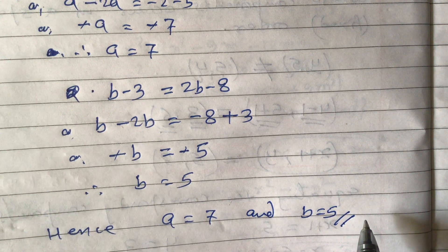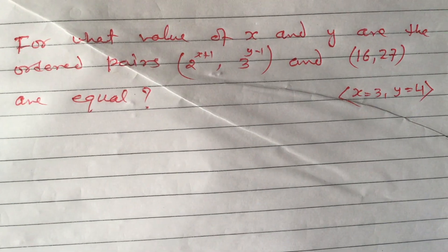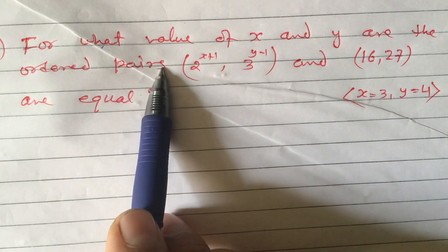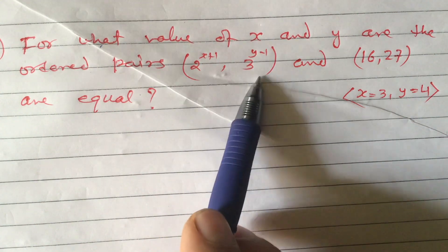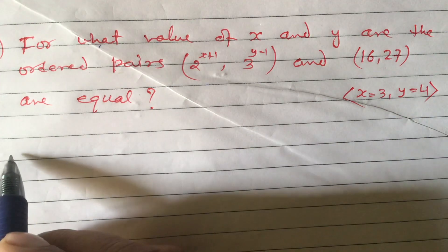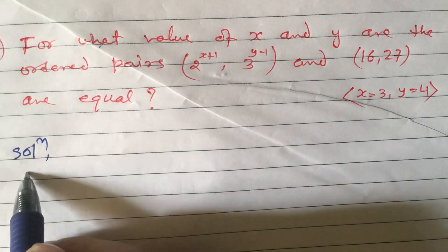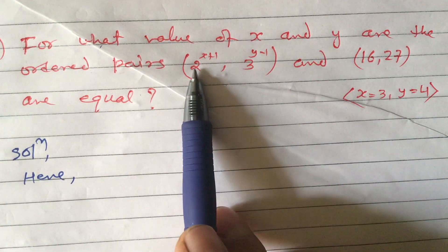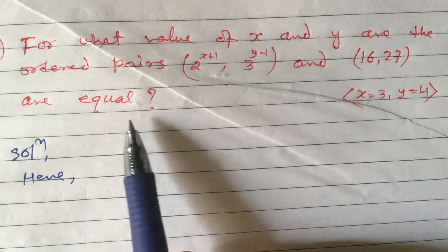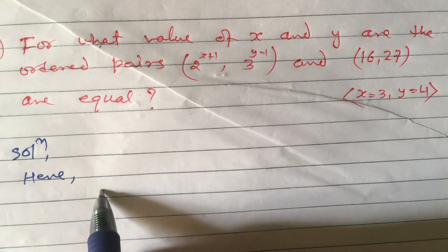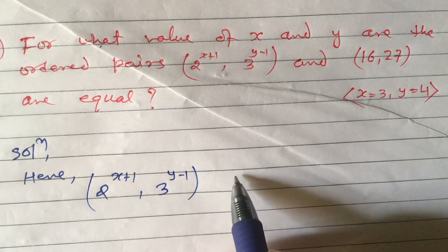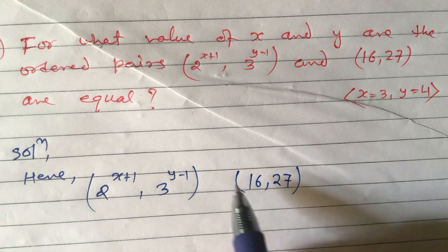Similarly, the second equation is quite different. For what value of x and y are the ordered pairs (2^(x+1), 3^(y-1)) and (16, 27) equal? We are given that these two ordered pairs are equal, so we equate them: (2^(x+1), 3^(y-1)) equals (16, 27).